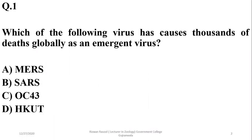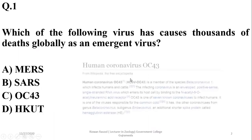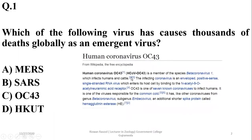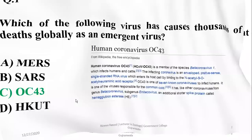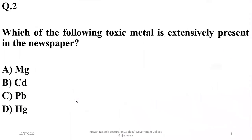Question 1: Which of the following viruses has caused thousands of deaths globally as an emergent virus? The answer is the coronavirus — human coronavirus OC43. This is an emergent virus and it has caused multiple deaths globally in this pandemic.